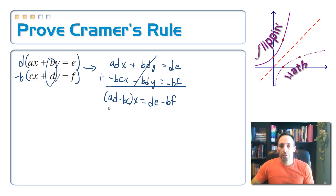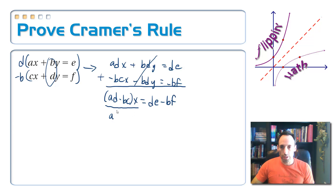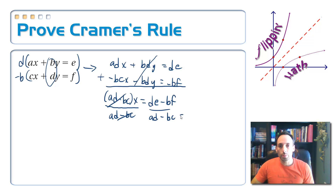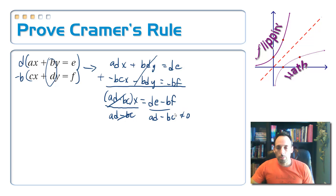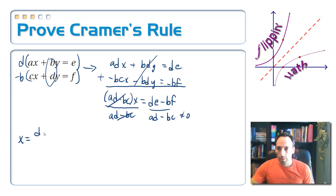In order to find x, I need to divide by whatever is in front — this coefficient, which is ad minus bc — and divide that on both sides. I can only do that if that number is not zero, because if it was zero, I couldn't divide by it. So this means the value of x is de minus bf divided by ad minus bc.